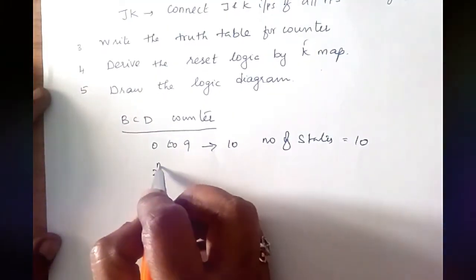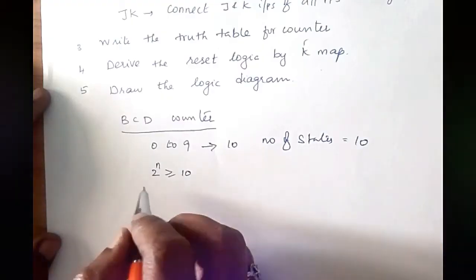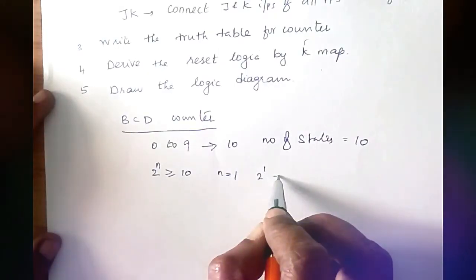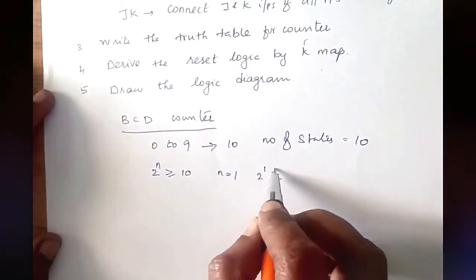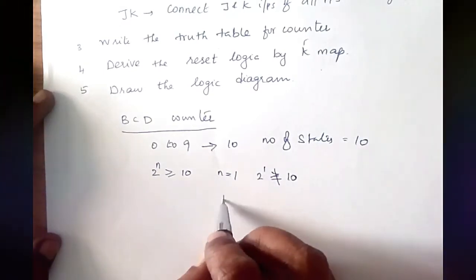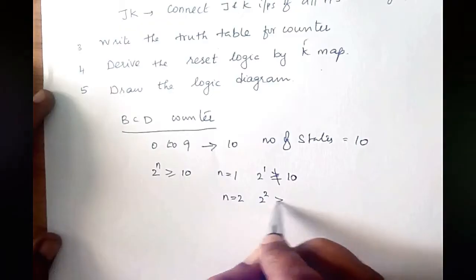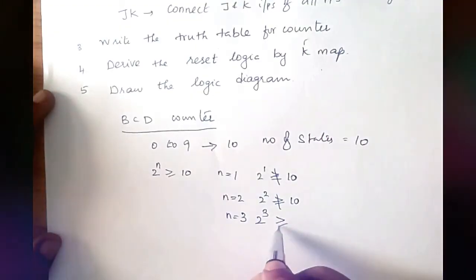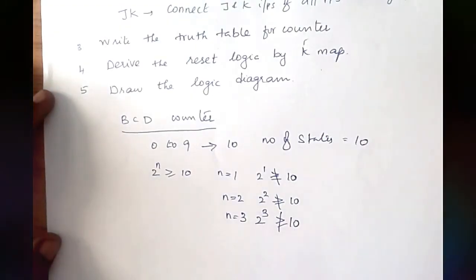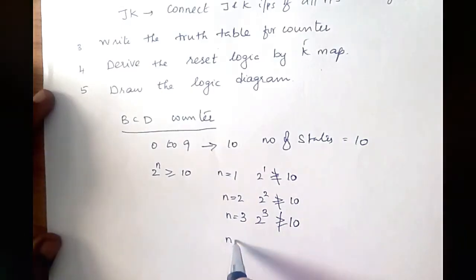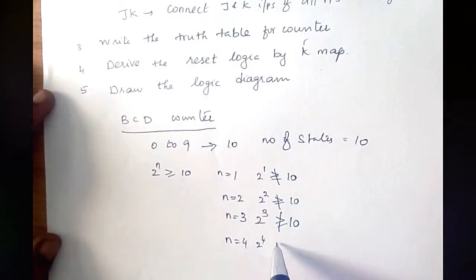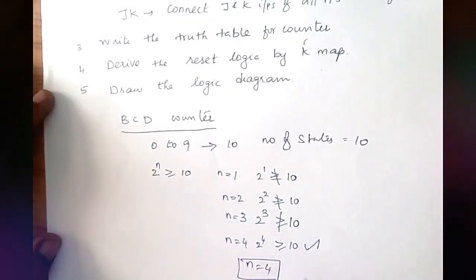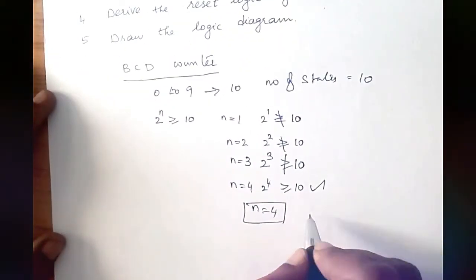We have to satisfy the condition 2 power n greater than or equal to 10. Substituting n=1 gives 2, not sufficient. n=2 gives 4, not sufficient. n=3 gives 8, not sufficient. n=4 gives 16, which satisfies the condition. So n equals 4, meaning the number of flip-flops needed is 4.